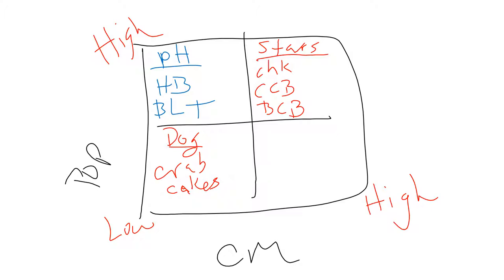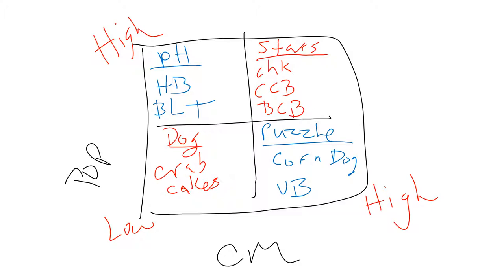The last quadrant is our puzzles. Puzzles make us a lot of money — above average contribution margin — but they're just not popular, and we're puzzled as to why. That's how to remember it. In this case our puzzles are corn dog and veggie burger. Now your matrix square should be completely filled out with all four quadrants: stars, dogs, plow horse, and puzzles.